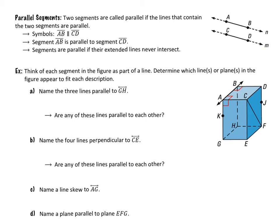Segments can also be parallel. If segment AB and segment CD lie on two parallel lines, then those segments are parallel. The parallel lines, even when extended, never intersect. So as long as those lines are parallel, any two segments — one on each line — will be parallel segments.